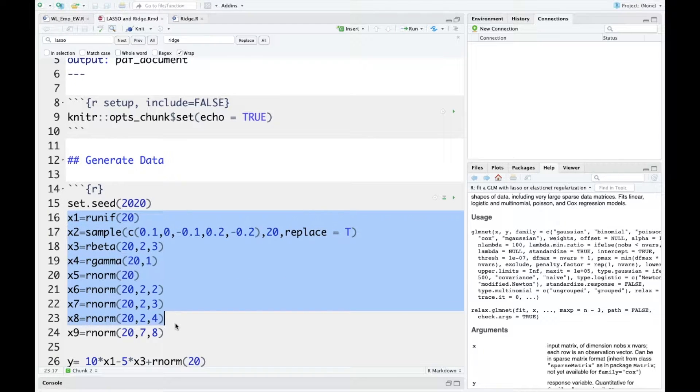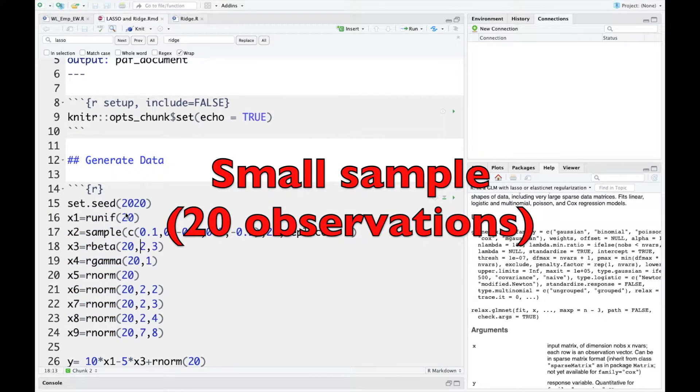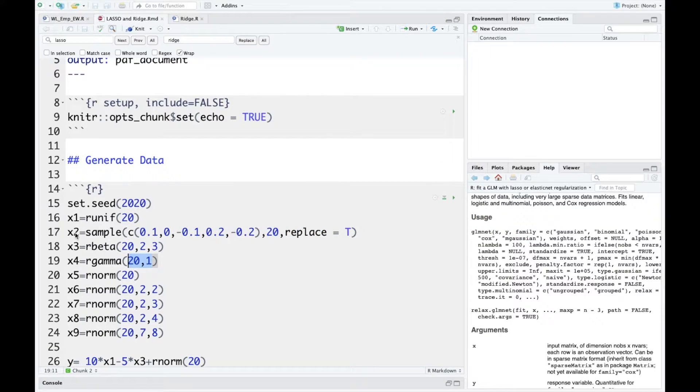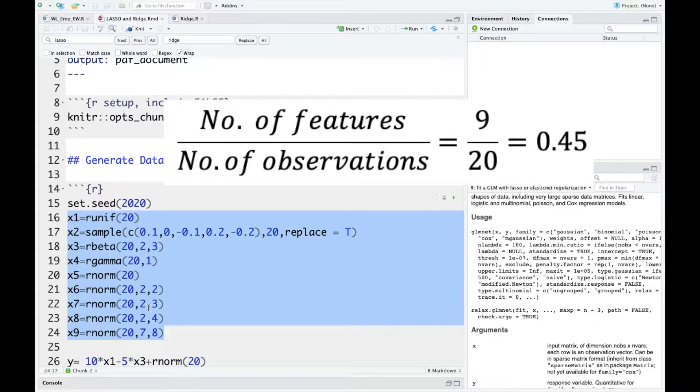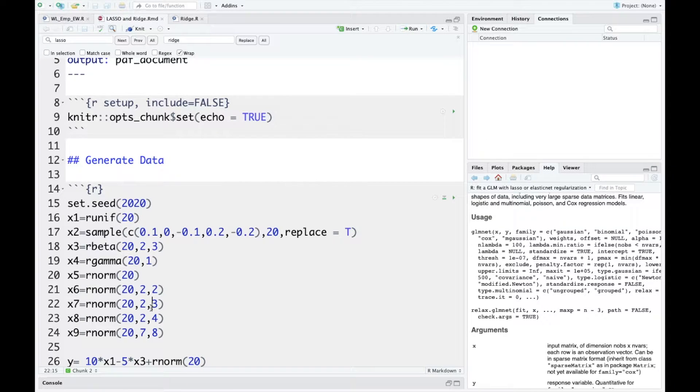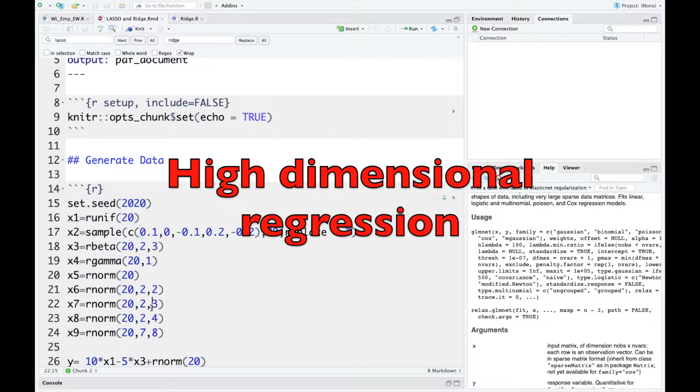I generate a small sample so you can see that each of the variables only have 20 observations and I have nine variables. The ratio of the number of features versus the number of observations is 0.45, which is considered quite big. We call this type of regression high dimensional.